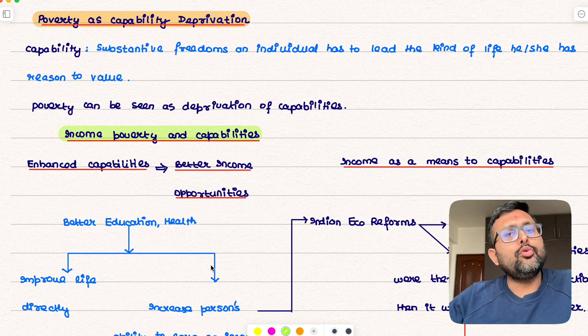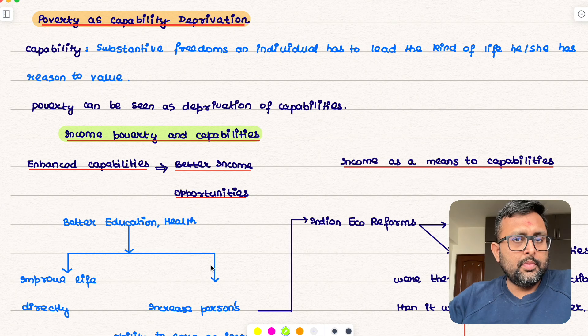So poverty is not only seen as the deprivation of income, it is also seen as the deprivation of capabilities. I will give you a few examples here.